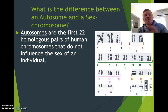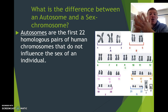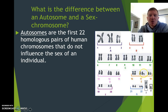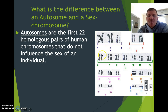First of all, autosomes are, in humans, the first 22 pairs of chromosomes. So if you look over here, you've got 1, 2, 3, 4, 5, 6, all the way up to number 22, and if you look at them closely, they're matching — matching in terms of size, matching where the centromeres are, and even though you can't see them in this picture, if you could see the banding, you would see that they're matching there as well. So we refer to them as the autosomes.